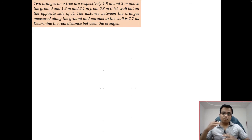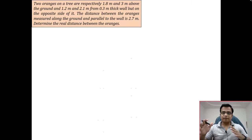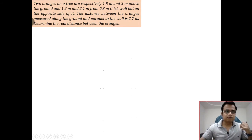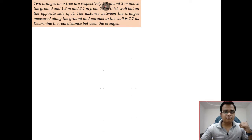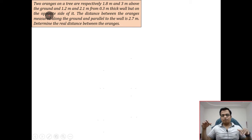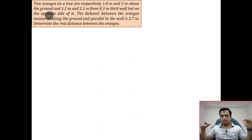Hi everyone, welcome to another problem on level 3 application of lines — specifically the projection of lines. The problem goes like this: two oranges on a tree are respectively 1.8 meters and 3 meters above the ground. So there are two oranges, one at a height of 1.8 meters while the other is 3 meters high.